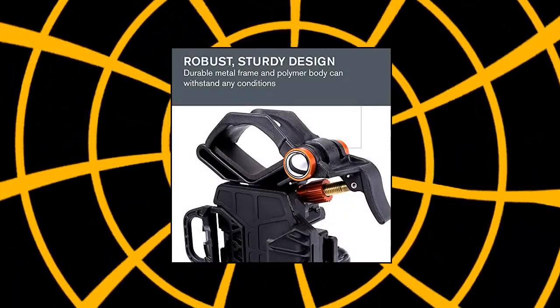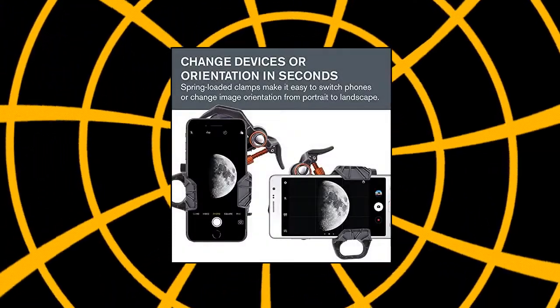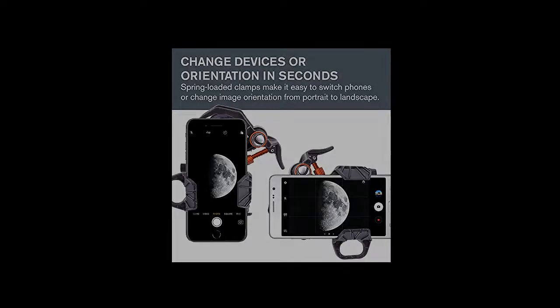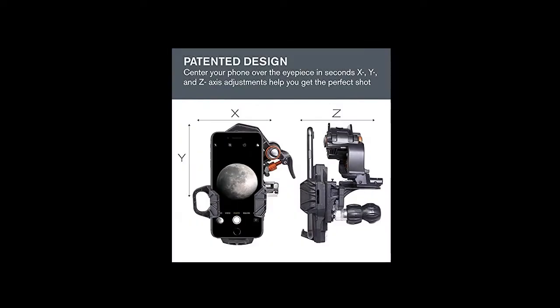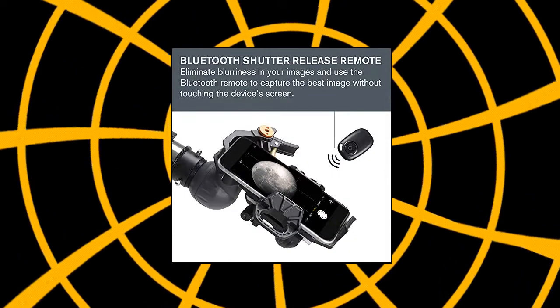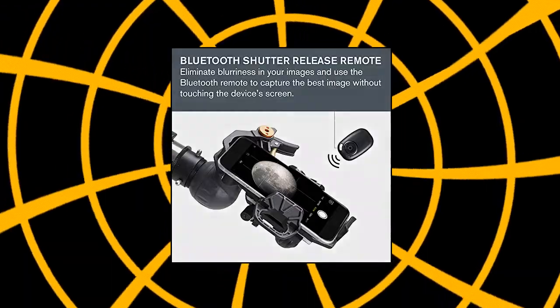Google, and Apple. You can also make tension adjustments to hold your phone firmly in place. Durable metal frame and polymer body stand up to rigorous field use. Fits any eyepiece from 35mm to 60mm in diameter, including telescopes with 1.25 and 2 inch eyepieces.